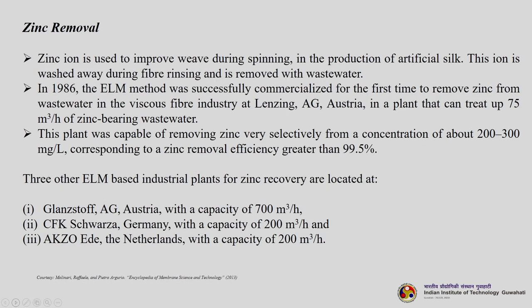Another example is zinc removal. Zinc ion is used to improve the whip during spinning in production of artificial silk, and is washed away with wastewater during fibre rinsing — zinc is highly toxic. In 1986 the ELM method was successfully commercialized for the first time to remove zinc from wastewater in the viscose fibre industries at Lenzing AG in Austria, in a plant treating up to 75 m³/hour of zinc-bearing wastewater. This plant removes zinc very selectively from concentrations of 200 to 300 ppm with a removal efficiency greater than 99.5%. Three other ELM-based industrial plants for zinc removal are also working: at Glanshof in Austria (700 m³/hour), CFK Schwarz in Germany (200 m³/hour), and Exo Ede in Netherlands (200 m³/hour).